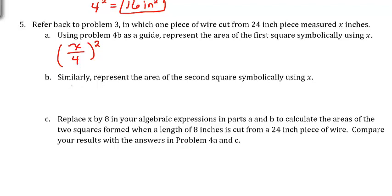Similarly, represent the area of the second square symbolically using X. The piece we had left was 24 minus X — that's the length of the other piece. We take that length (our perimeter), divide it by 4 because the square has 4 sides, giving the side length, and then square that to find the area: ((24 − X)/4)².